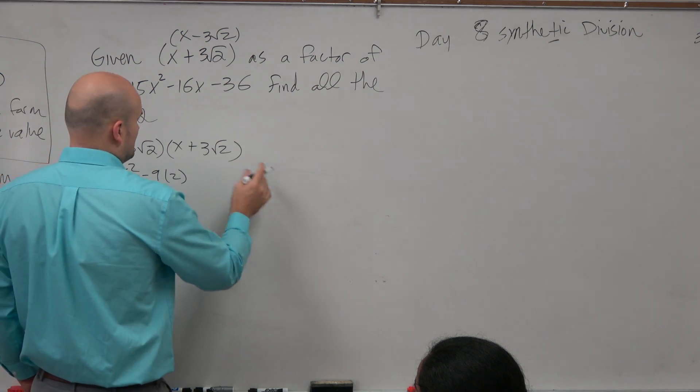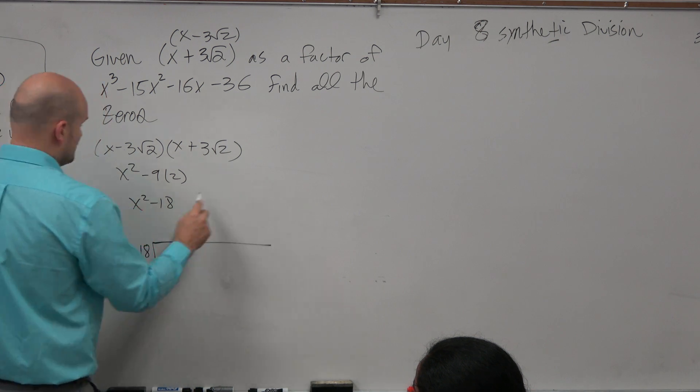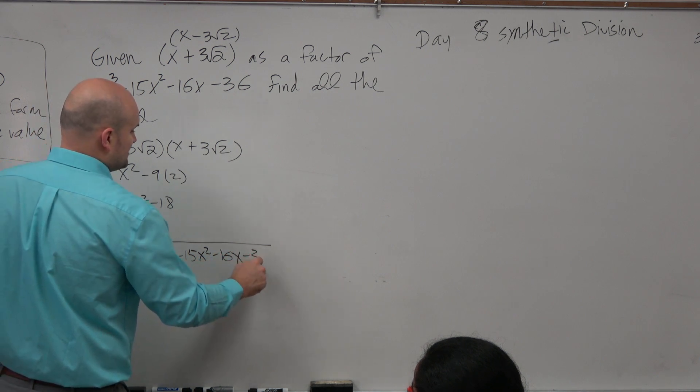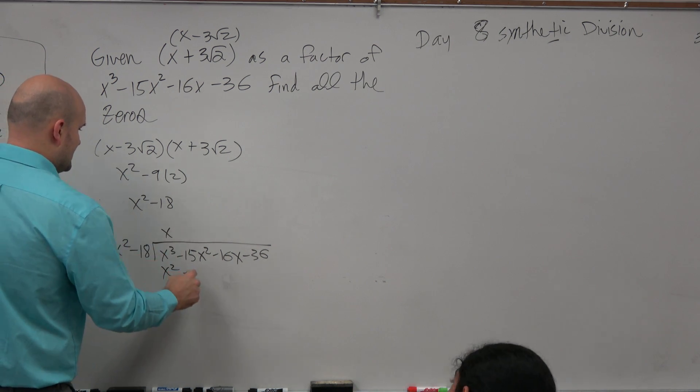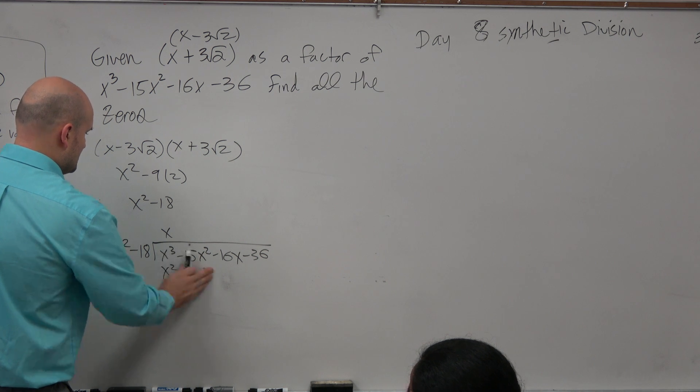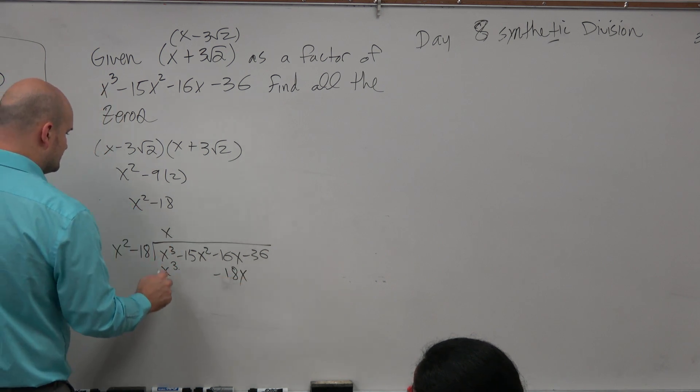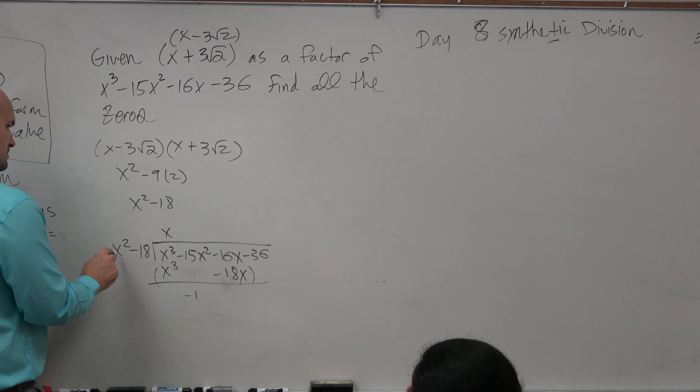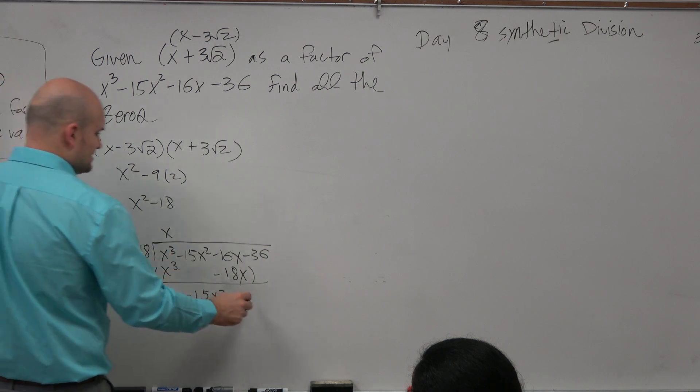So now let's use long division here. So let's do x squared minus 18 divides into x cubed minus 15x squared minus 16x minus 36. x squared goes into x, x times x times x squared, 18 negative 18x, oops, wait a minute, what's happening here? That's x cubed. Negative 18x, subtract our rows, that becomes a positive 2x minus 36.